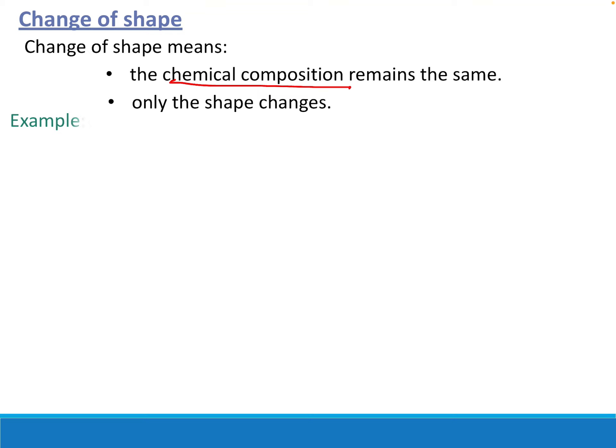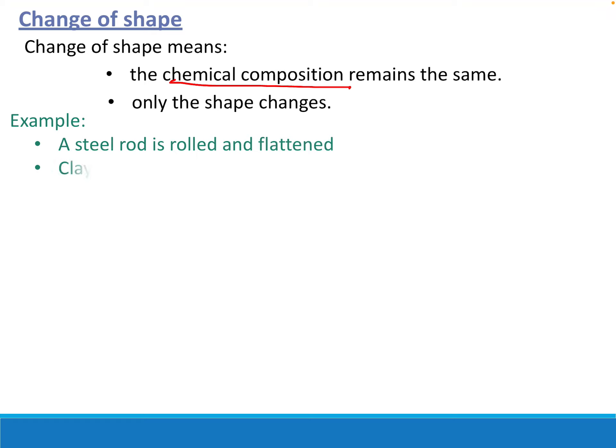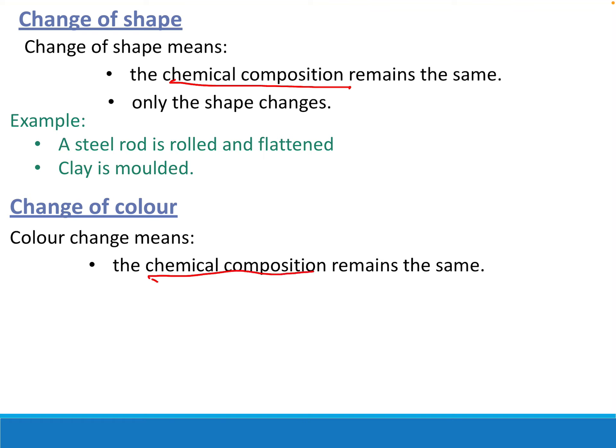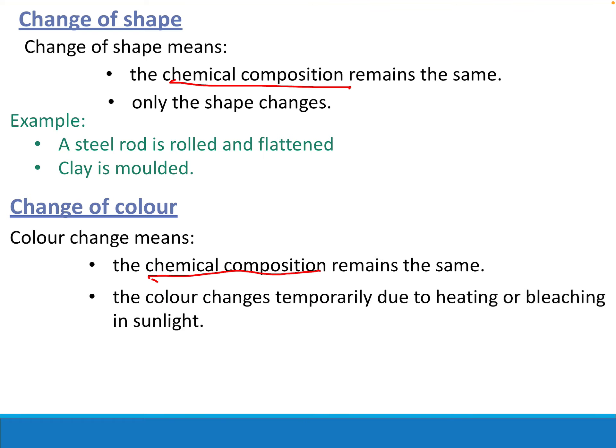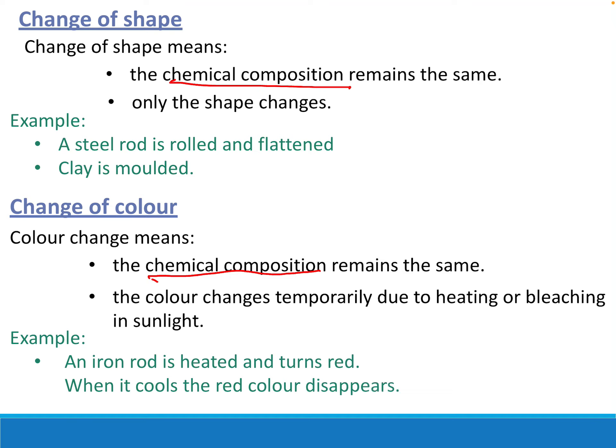Changing shape means the chemical composition stays the same - only the shape changes. For example, if you take a steel rod, heat it up, bang it with a hammer so it becomes a flat sheet of metal, it's still steel. Clay when you make pottery and change its shape is the same idea. For color change, the color changes temporarily because of heating or bleaching in the sun. An iron rod or stove plate heats up and turns red when heated, but when it cools down the color change disappears.